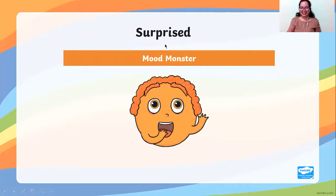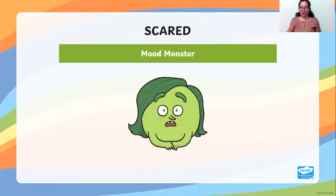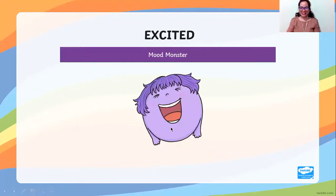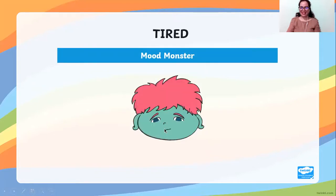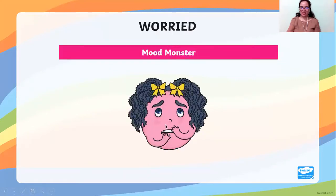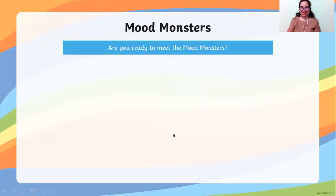Surprised — the monster is surprised. If someone will give you a gift, sometimes you will feel surprised. Next: scared. She is scared; look at the face of the monster. Next: excited — the monster is excited. Next: calm — she is calm. Next: tired — the monster is tired. Next: worried — the monster is worried.